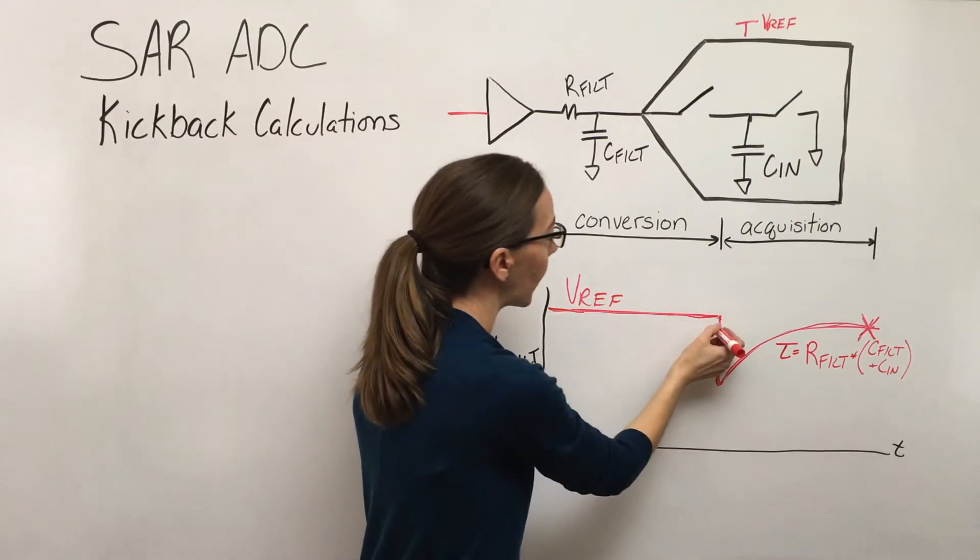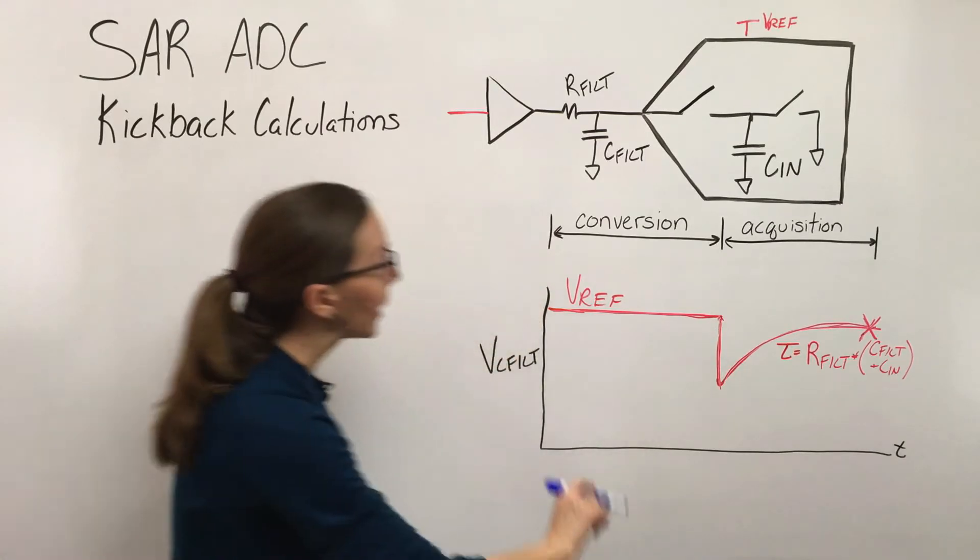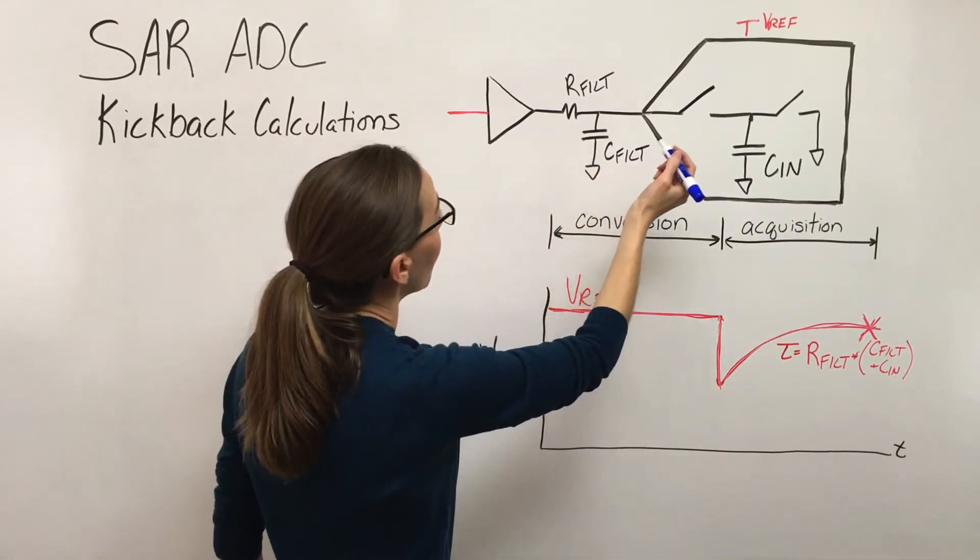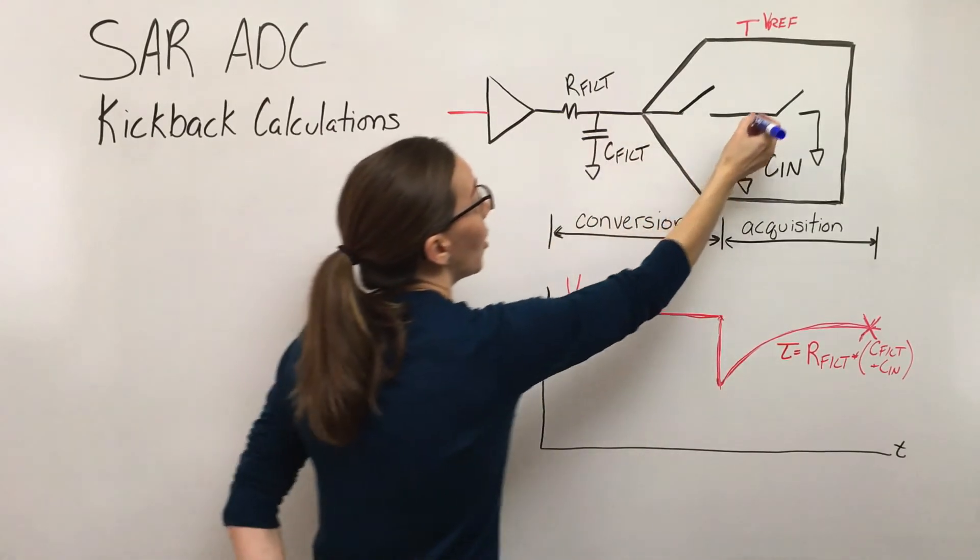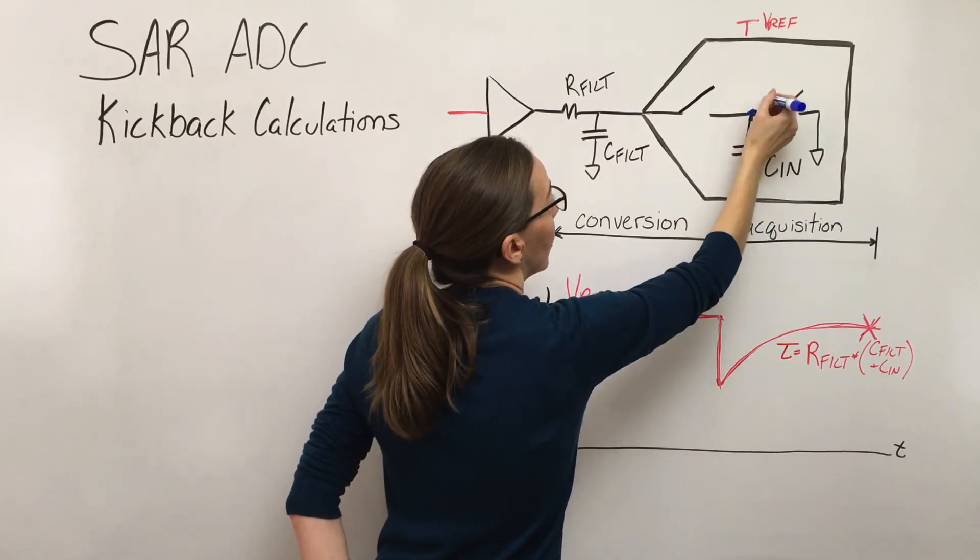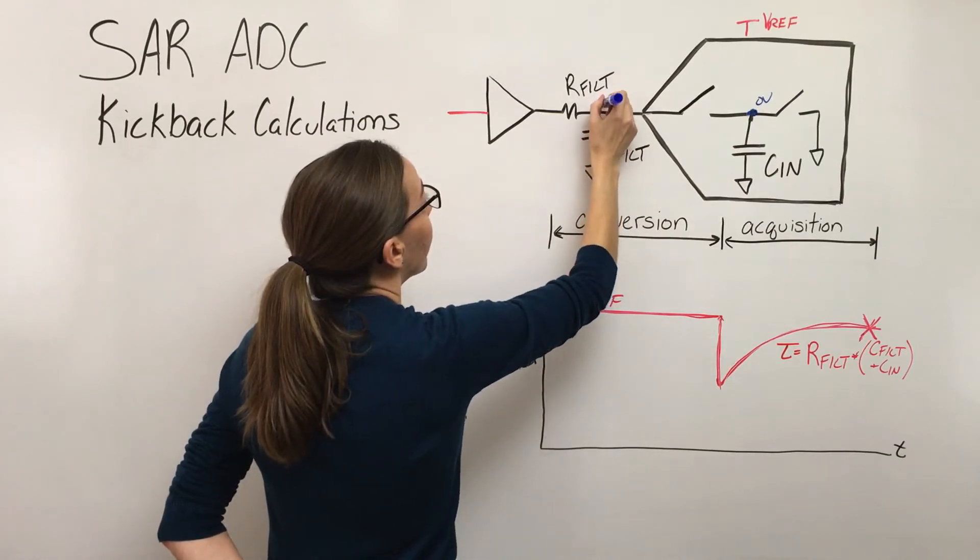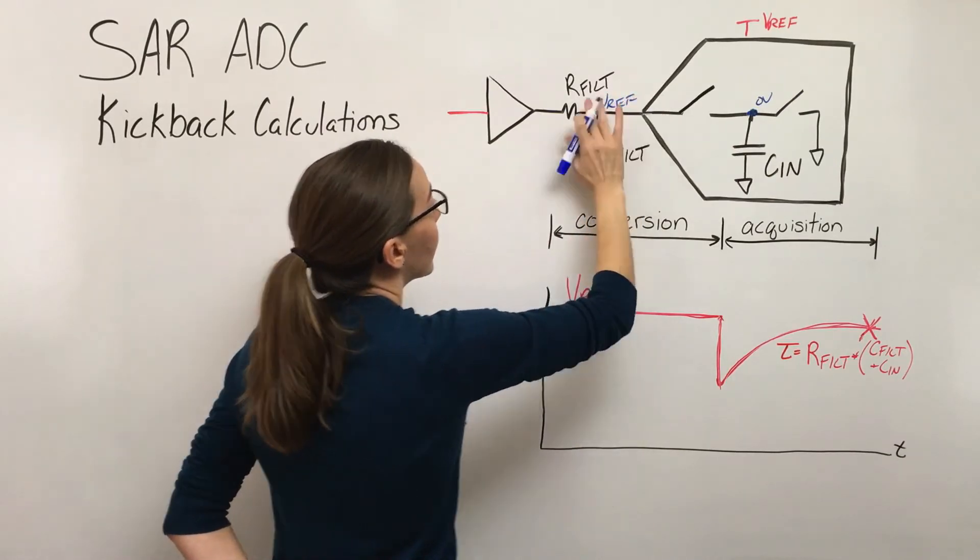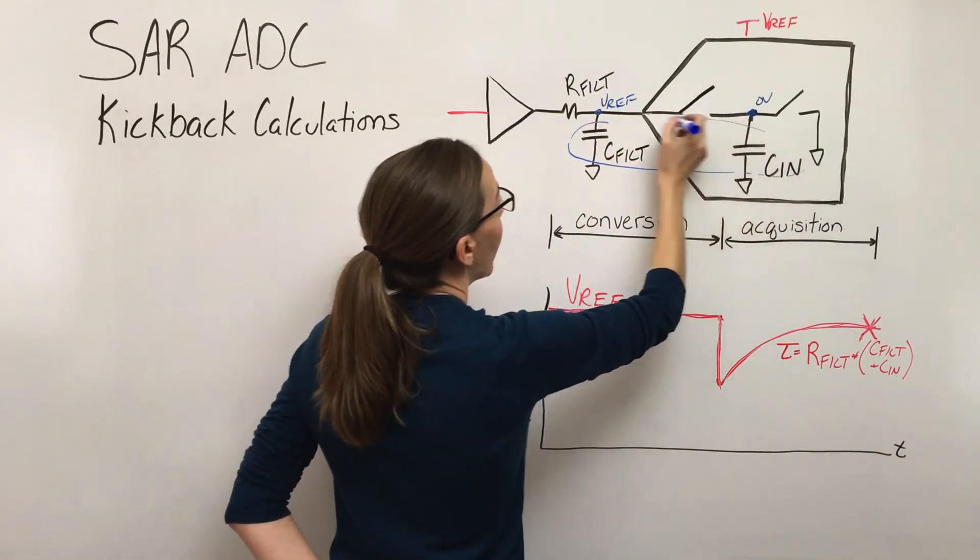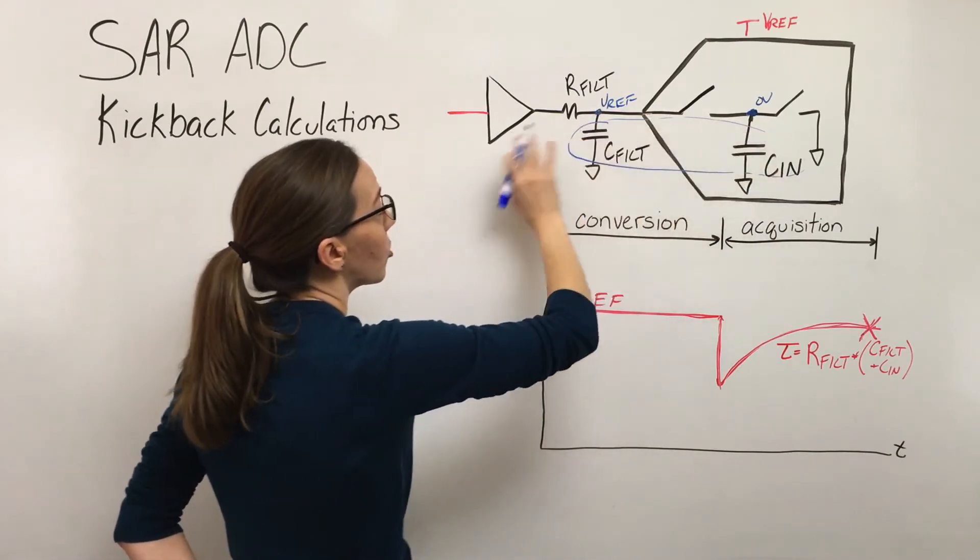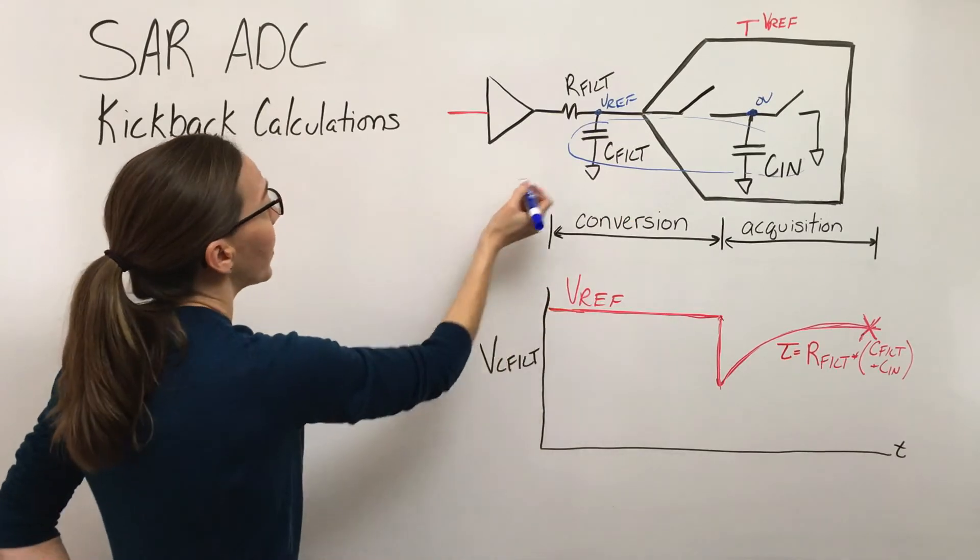So to come up with what is this value right here, let's think about what's going on with these capacitors. At this point when you've got this charge redistribution, we've got zero volts here and then we've got v-ref at this node. Then the switch closes and the charge on these two capacitors will redistribute so that the charge is evenly on those nodes.